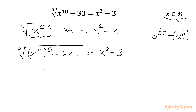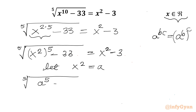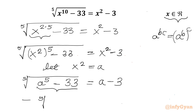Now it is substitution time. Let x squared equal to a. So we can write our equation as: 5th root of a to the power 5 minus 33 equal to a minus 3. Taking minus common from the radicand — since this is an odd power — we get: the 5th root of (33 minus a to the power 5) equal to a minus 3.